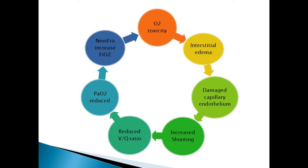As the membrane thickens, there is loss of ventilation to that alveolus, leading to increased shunting. Air cannot reach the alveolocapillary membrane, resulting in a reduced V/Q ratio — where V is ventilation and Q is perfusion. As ventilation decreases due to the damaged capillary endothelium, this leads to a V/Q mismatch.